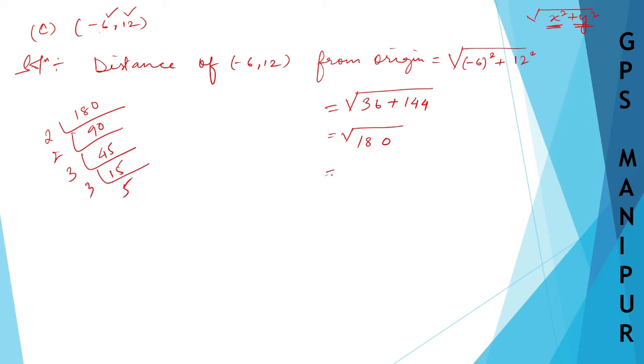So, what I can write down here is root over 2×2×3×3×5. And 2×2, I can write as 2 squared, and 3×3, I can write as 3 squared.